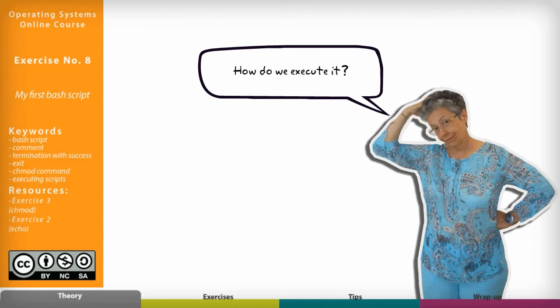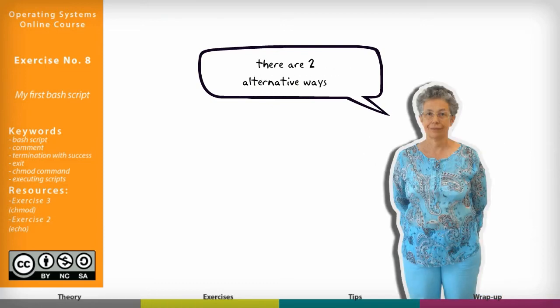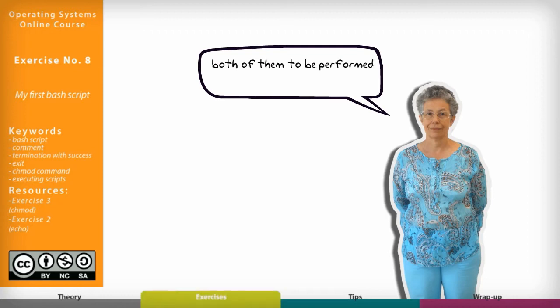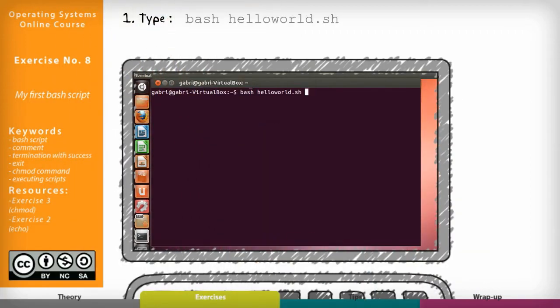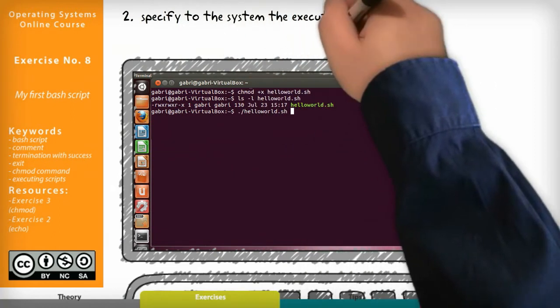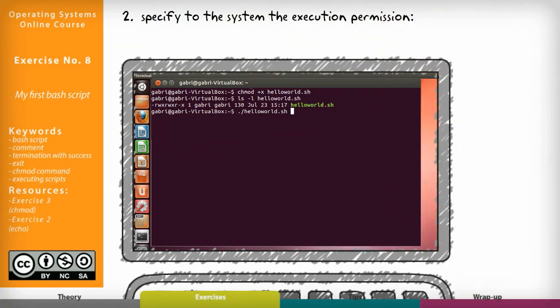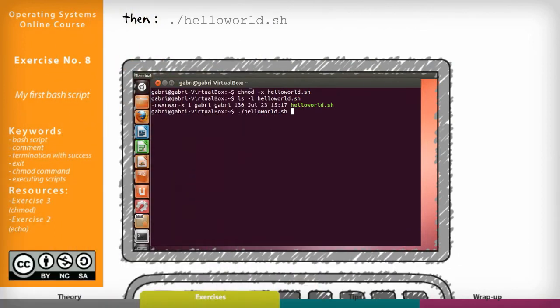Now, how do we execute it? There are two alternative ways, both to be performed on the terminal in the same directory where you saved the script. Number 1: type 'bash hello_world.sh'. Number 2: specify that the file has execution permission with 'chmod +x hello_world.sh', then run it with './hello_world.sh'.